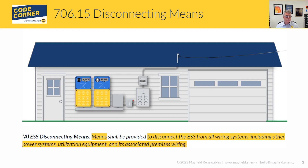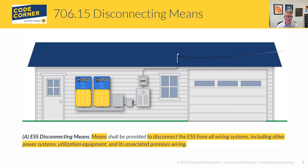First is 706.15(a), which talks about ESS disconnecting means. All this is saying is that we need to provide a way to disconnect our ESS from all the other components and wiring systems on the premises. The highlighted text on screen indicates changes from the 2020 to the 2023 code — not huge changes, but there was some wording change between those two versions.